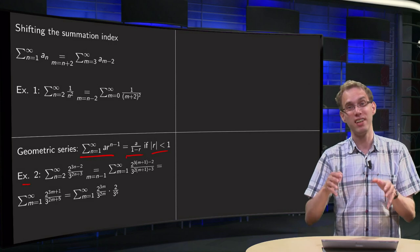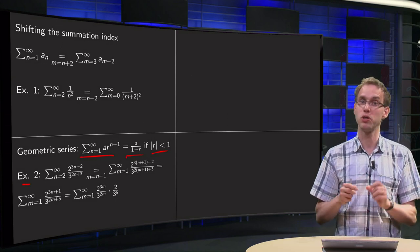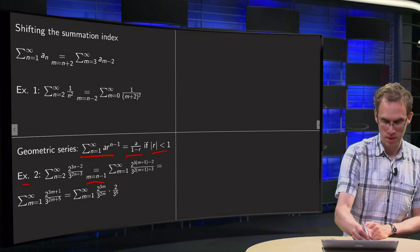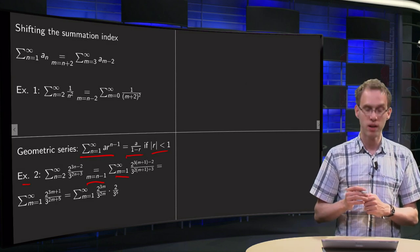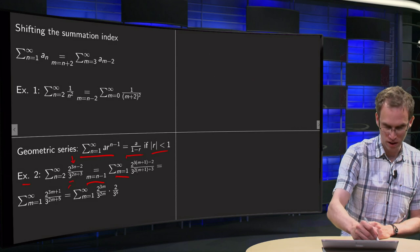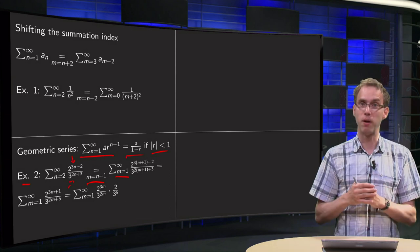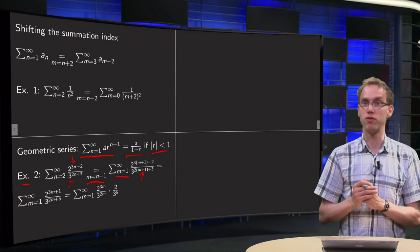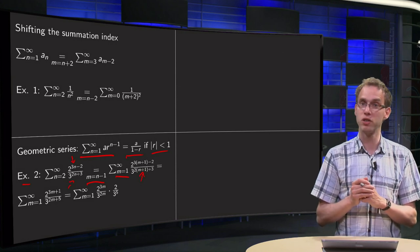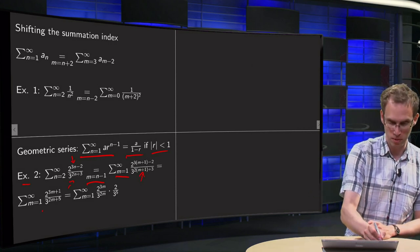We can rewrite it to the standard form. First, we need to start at 1 instead of at 2, so with n starting at 2, we want m starting at 1. We use a new index m equals n minus 1, so m starts at 1 instead of 2. Then n equals m plus 1, so everywhere we have n we substitute m plus 1. We get 3 times (m plus 1) minus 2 in the power of the numerator, and 2 times (m plus 1) plus 3 in the power of the denominator. Working out: 3m plus 3 minus 2 equals 3m plus 1 in the numerator, and 2m plus 2 plus 3 equals 2m plus 5 in the denominator.